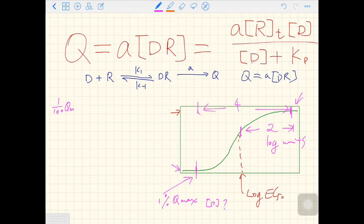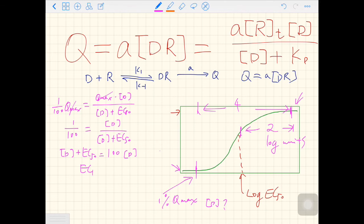Remember the equation? On the left hand side we have 1% Q max. On the right hand side we have Q max times D over D plus EC50. Q max cancels out and we have 1 over 100 equals D over D plus EC50. We do the cross multiplication. We have D plus EC50 equals 100 times D. So we have EC50 equals 99 times D, and D equals 1 over 99 EC50.